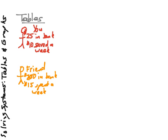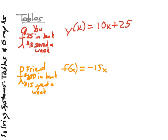In order to work with this, we're going to write a system of equations. For you, we'll say Y of X is equal to, you saved $10 per week and you started with $25. So that's 10x plus 25. Now your friend, F of X, spends $15 each week but started with $200. That's negative 15x plus 200. We're going to take these two functions, Y of X and F of X, and put them into a table of values.